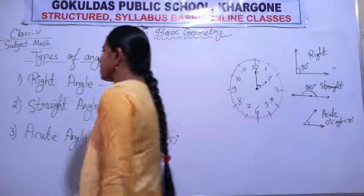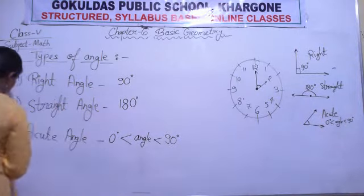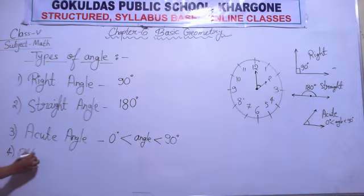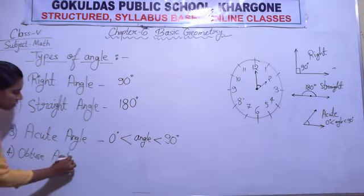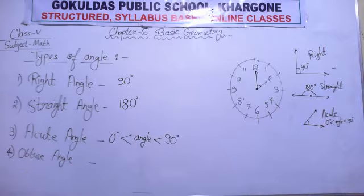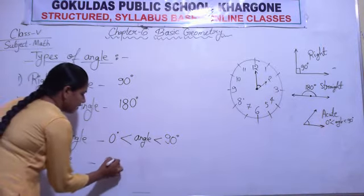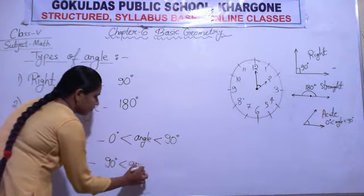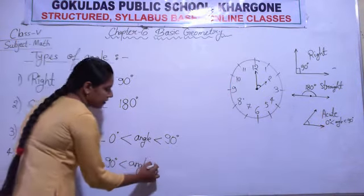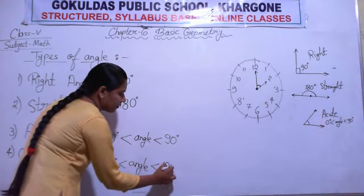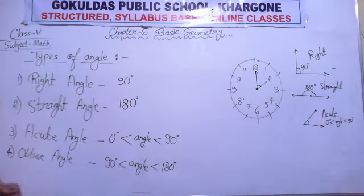Now coming to the next type, which is the obtuse angle. An angle which is greater than 90 degrees and less than 180 degrees is known as an obtuse angle.